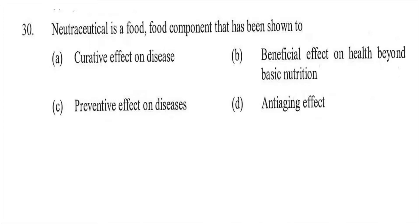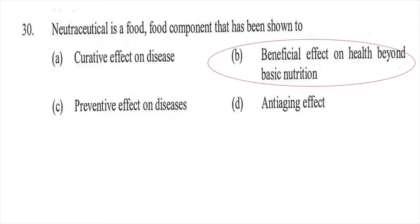Question thirty: A nutraceutical is a food or food component that has been shown to have — option A a curative effect on disease, option B beneficial effect on health beyond basic nutrition, option C preventive effect on disease, or option D anti-aging effect. The right answer is B, beneficial effect on health beyond basic nutrition.